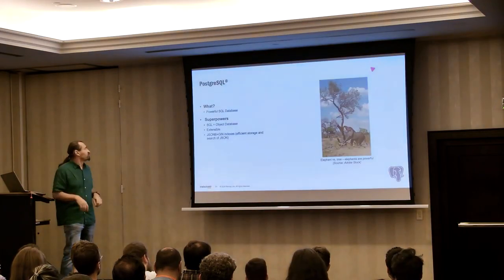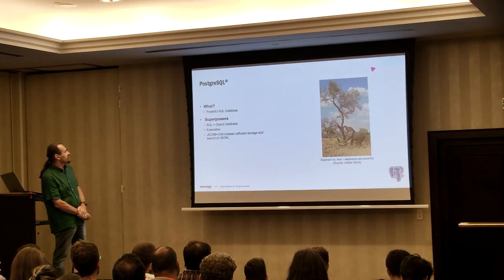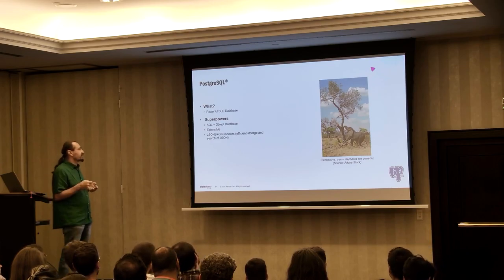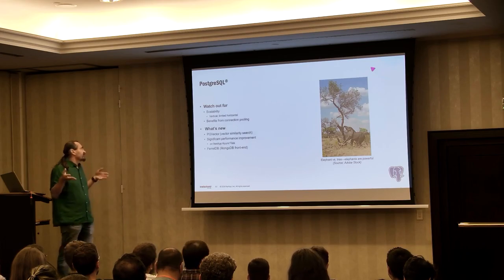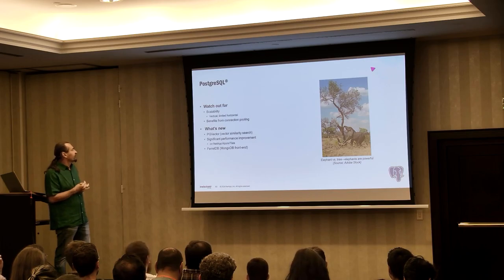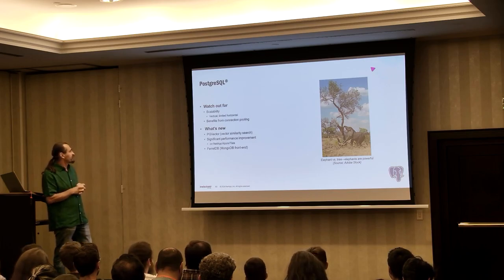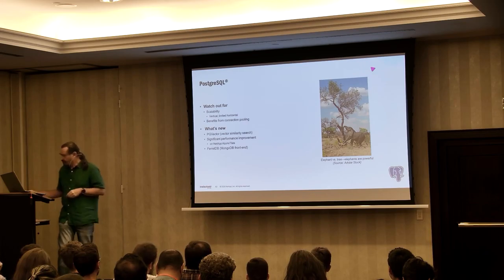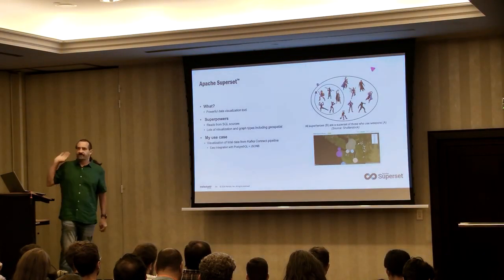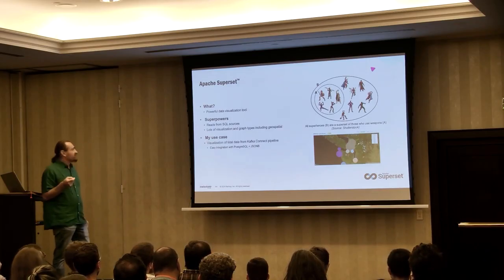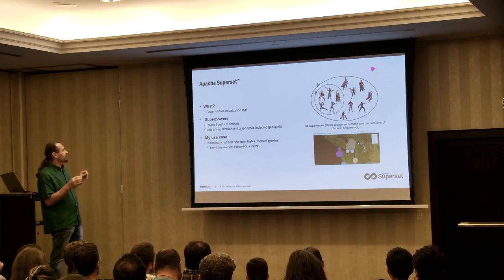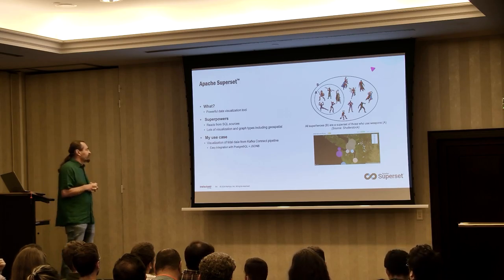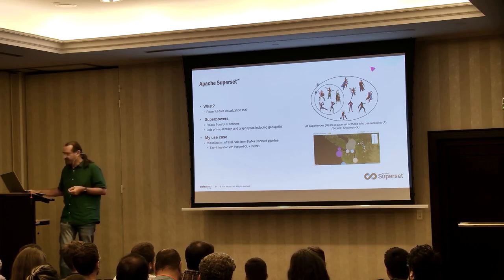Number eighteen: PostgreSQL — a powerful SQL database. It's SQL plus objects, highly extensible, and gives you the ability to store and index JSON data types really easily. Scalability is limited — it's primarily designed for vertical scaling. It's also getting vector search like many other technologies. Number nineteen: Apache Superset — a very powerful data visualization tool that reads from SQL sources. It has lots of visualization graph types including geospatial, and I've used it to visualize title data in conjunction with Postgres and JSON.